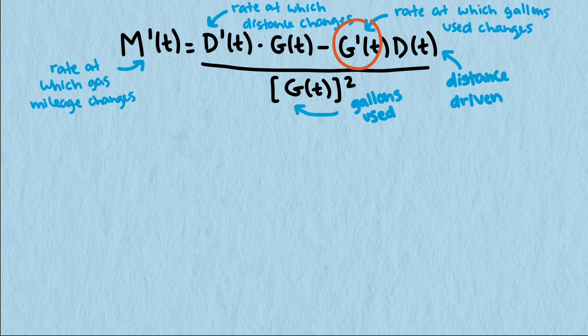Of all these values, the one that I want to know is g prime of t, because it represents the rate that the gas is being used by the car. If we can get values for all the other quantities in the equation, then I can solve for g prime.